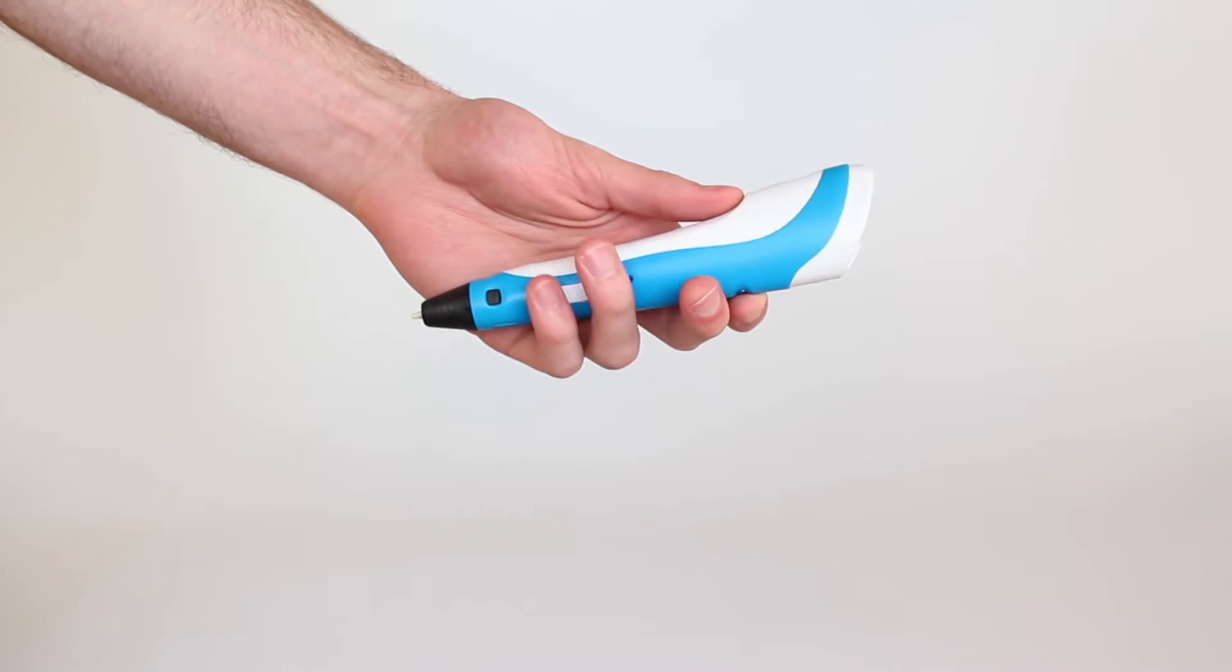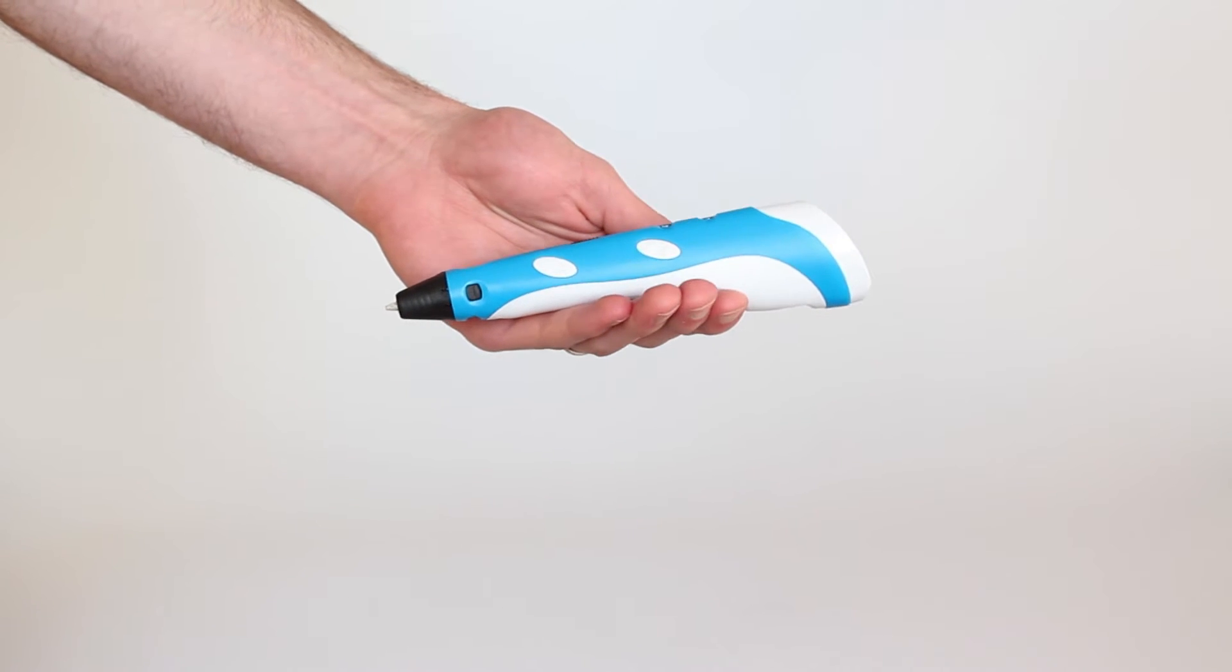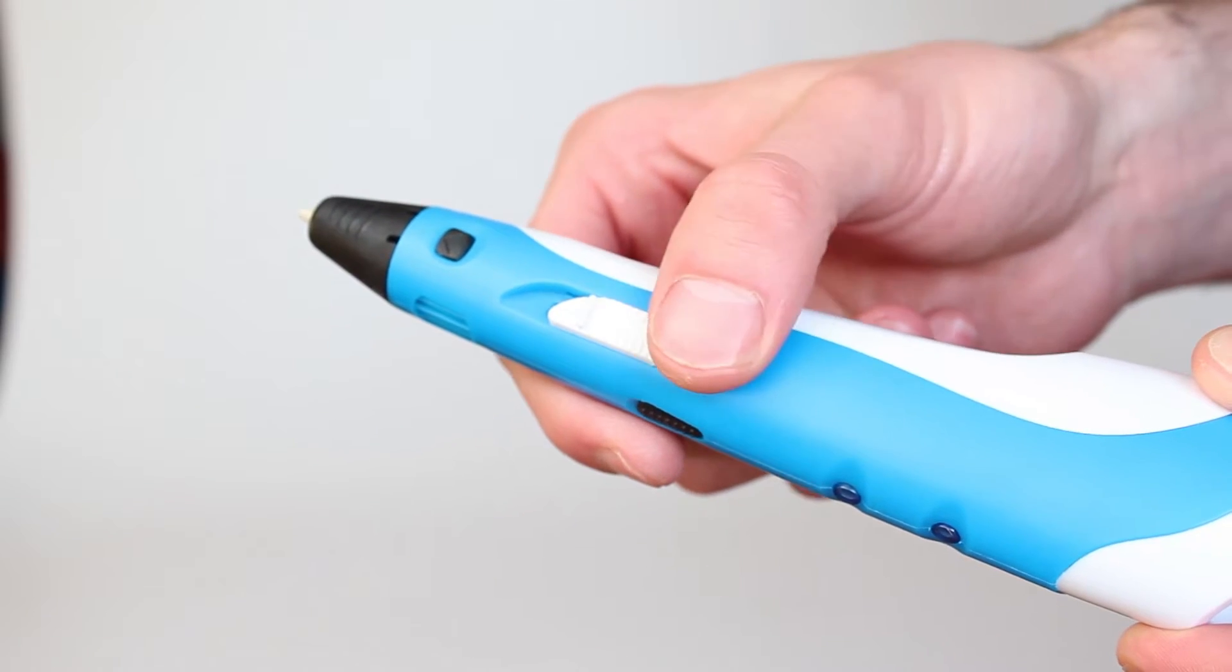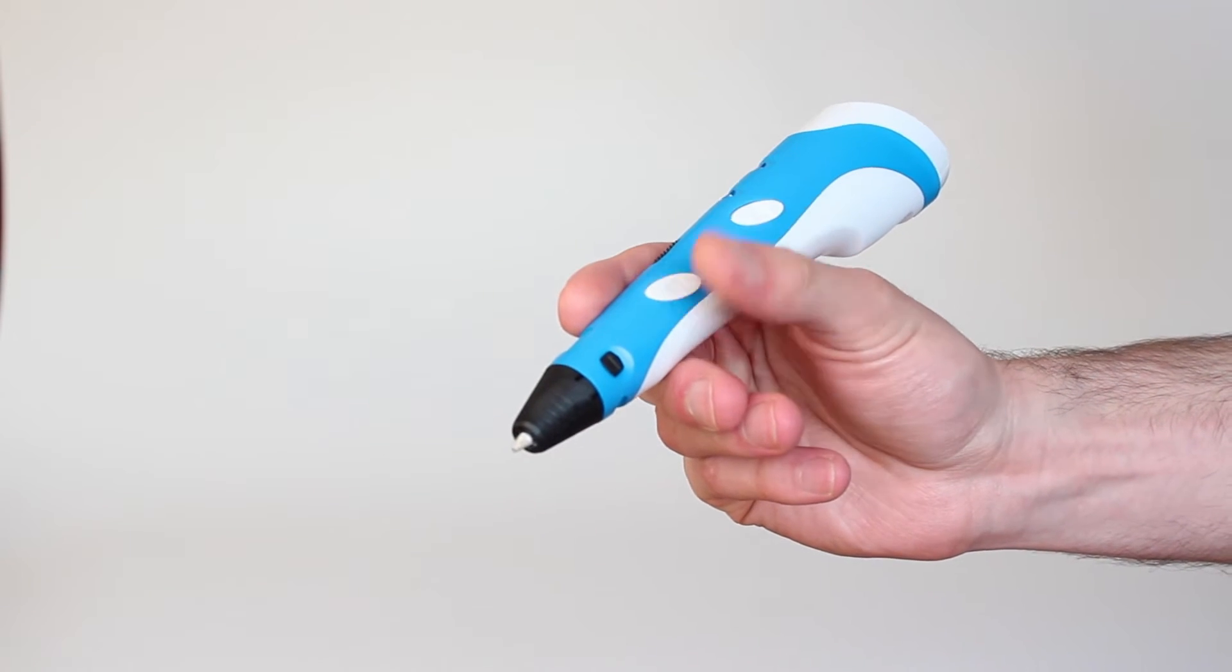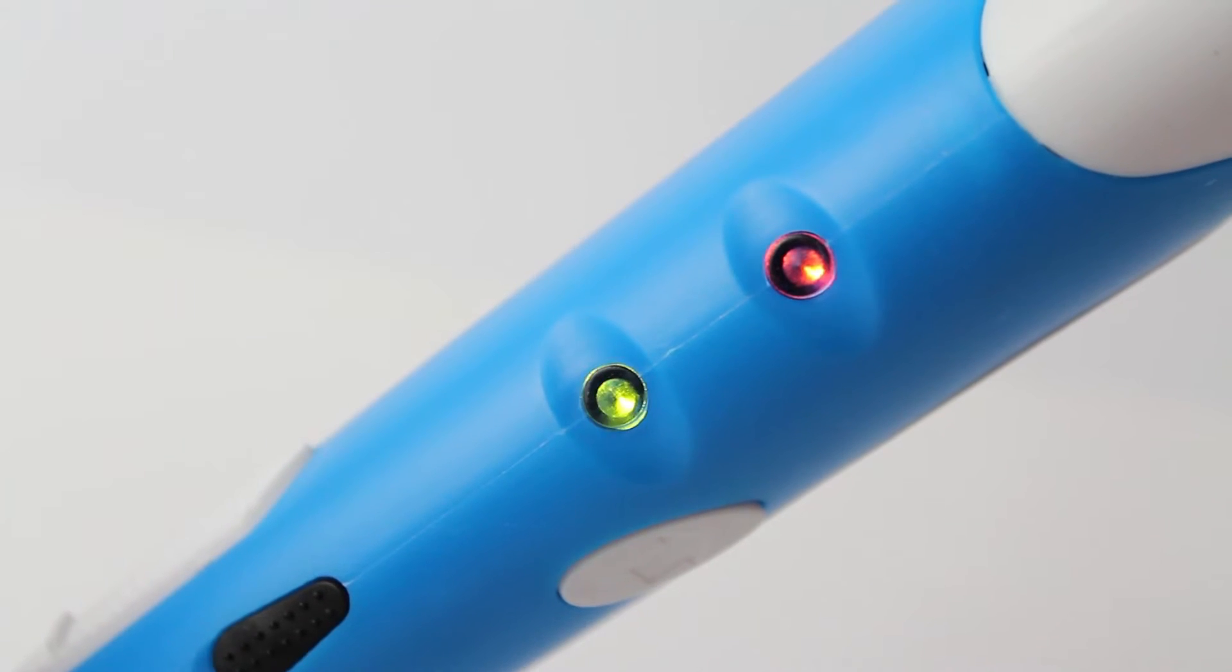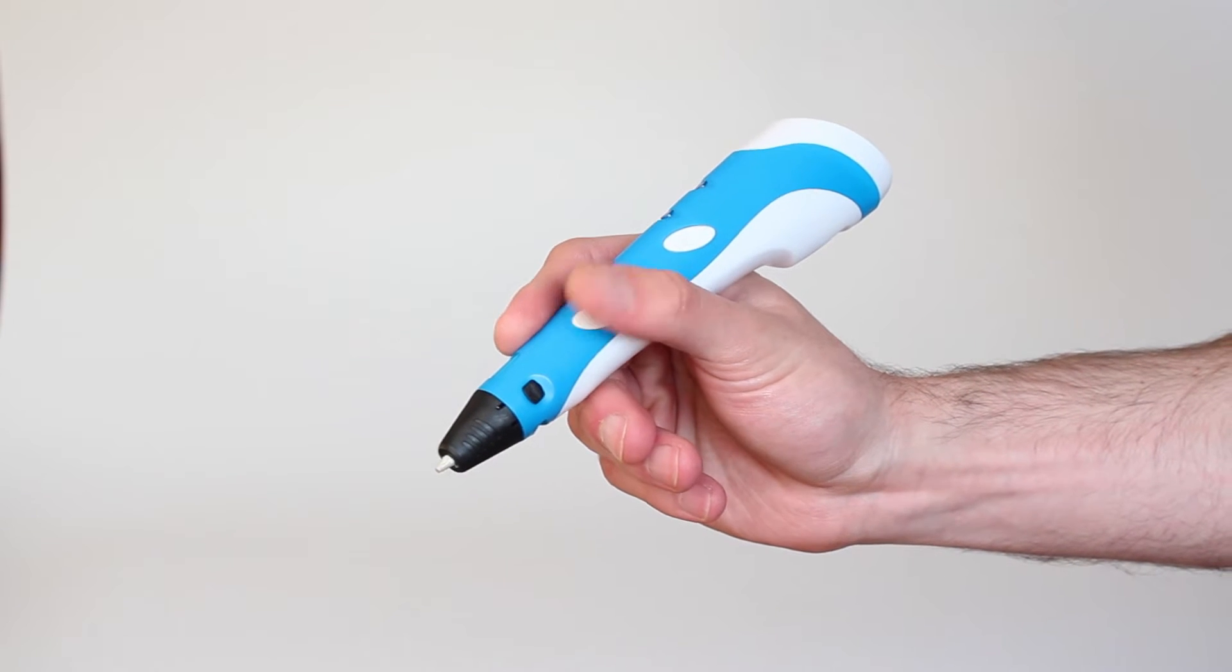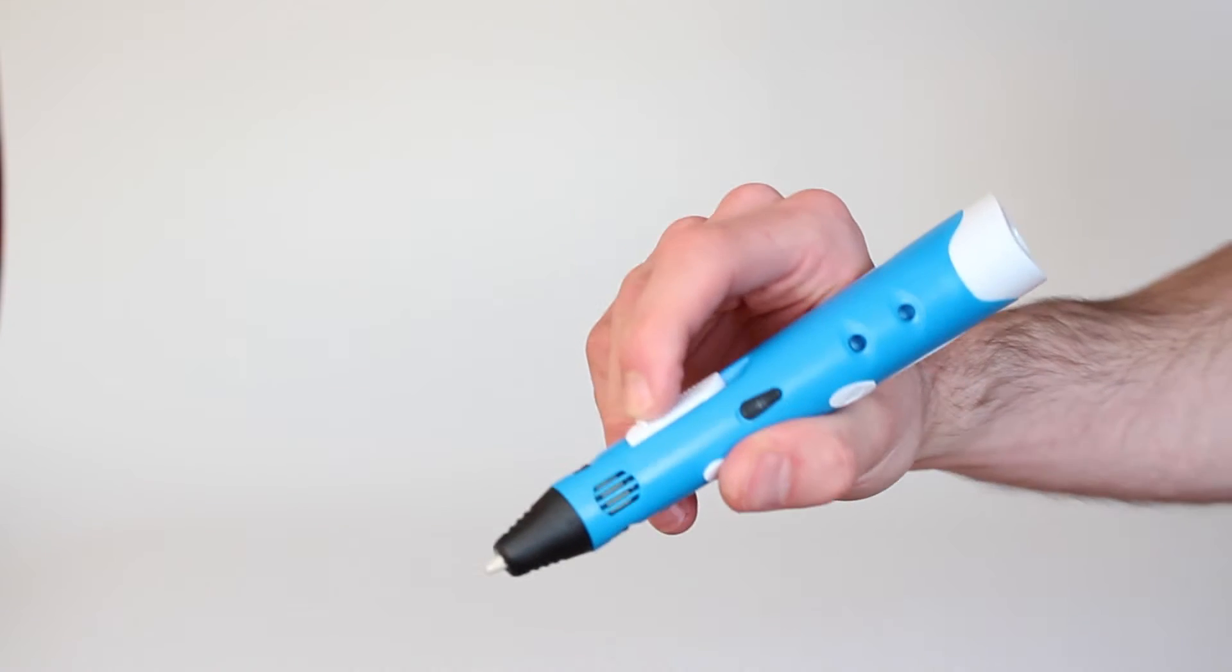The 3D Pen works very simple. It consists of a forward and a backwards button, speed control slider, 2 LEDs and a temperature dial. Press the forward button once and the pen will heat up until a yellow LED lights up. Press again to start the motor and insert your filament and you are good to go.